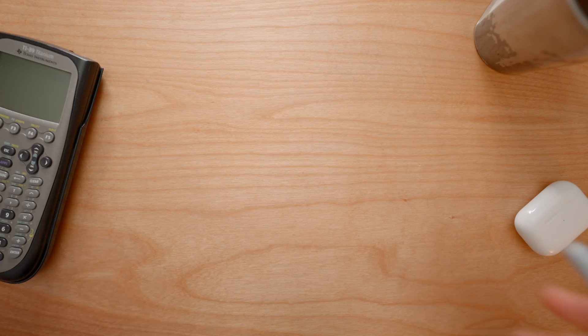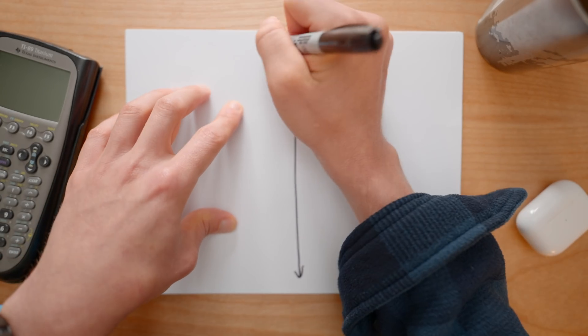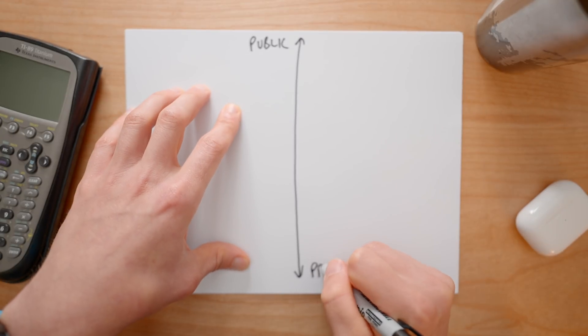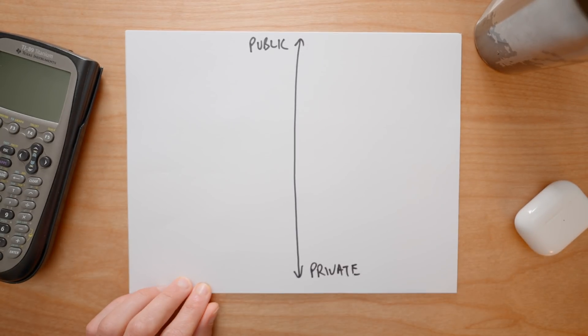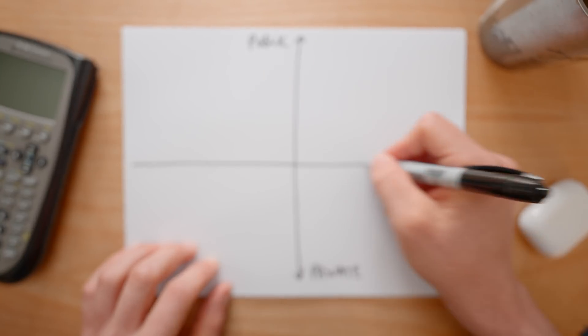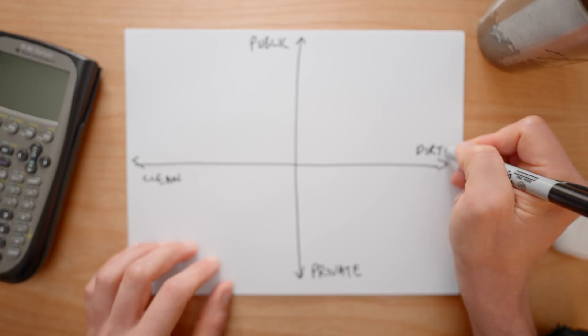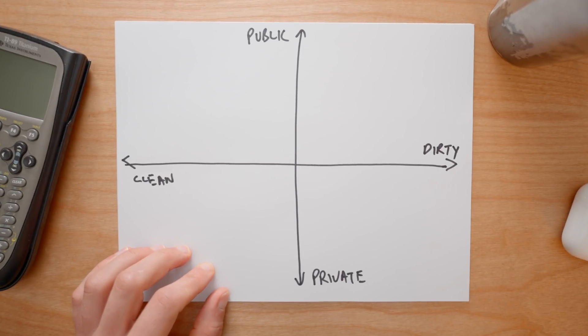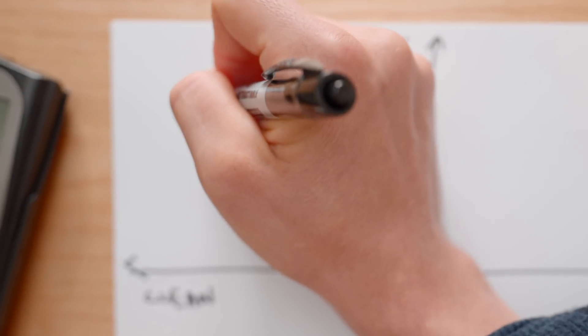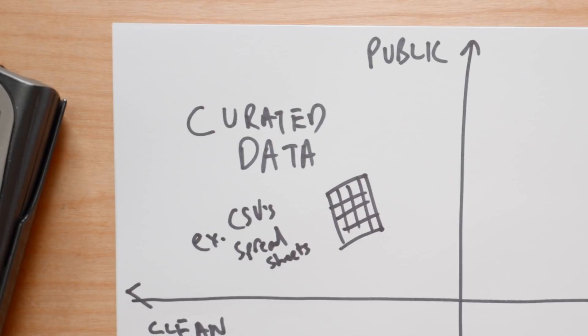Once you know the problem you want to solve, the next step is actually collecting the data, which can come from a lot of different sources. First is around the availability of the data — is it publicly available, or do we have to sign into a service or go behind a paywall? The other major aspect is whether it's clean or not. If it's clean, it's usually in the form of CSVs or a database. If it's not, it may be spread over web pages. So I started in the easiest section: looking for clean, publicly available data.